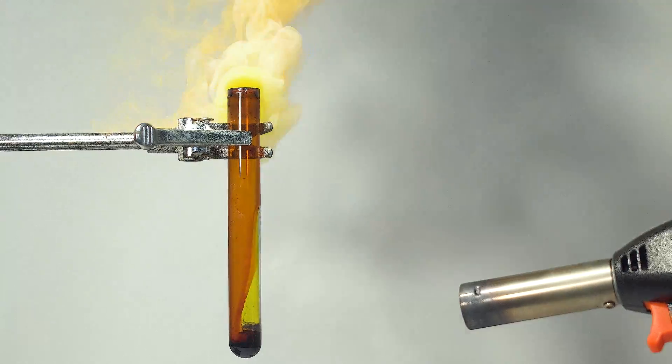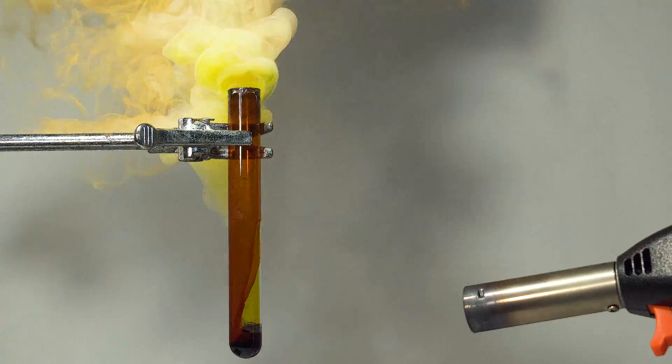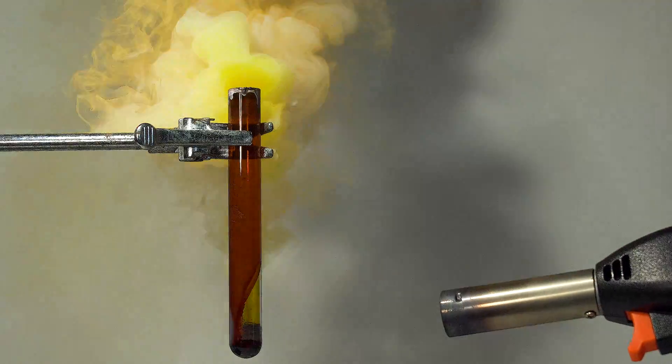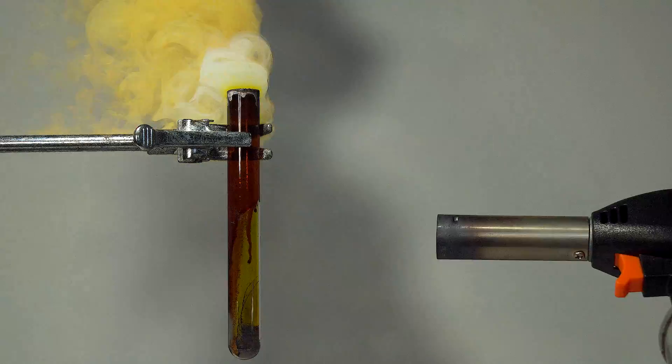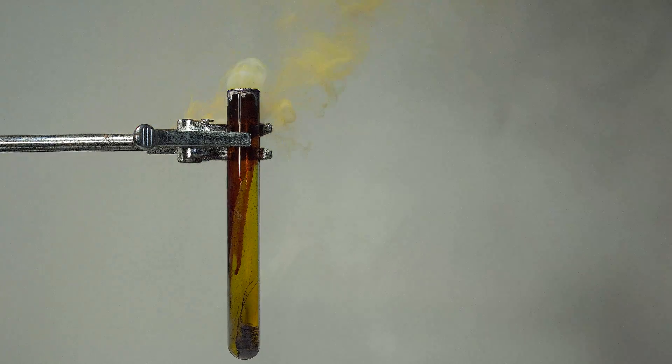When vanadium tetrachloride boils in air, it produces a cloud of orange-yellow smoke, similar to other liquid metal chlorides. An interesting reaction occurs between vanadium tetrachloride and air moisture when they react slowly.